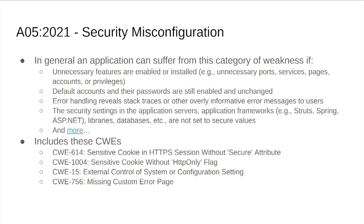External control of system or configuration settings — there was another vulnerability around the same time as Log4Shell, with Logback. It required changing the Logback configuration by writing a configuration file. If you can trick a server into writing a local file, a configuration file is an excellent target. In the case of Logback, there was a configuration setting you could give it that would cause it to become an executor of code.